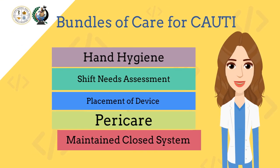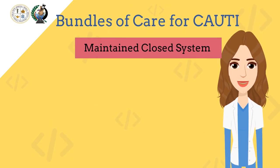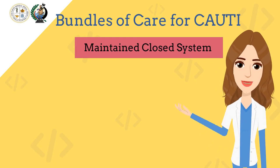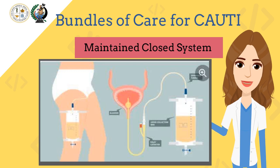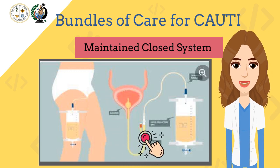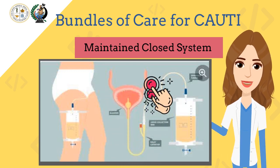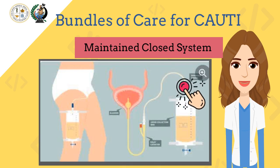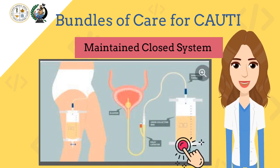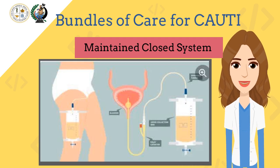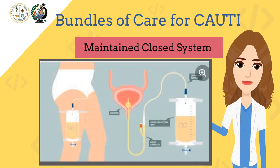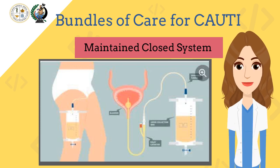For the last component of this catheter-associated urinary tract infection care bundle, we have maintaining the closed system. Maintaining sterility is its objective. Continuously maintaining a closed drainage system is indispensable in infection prevention. This applies except when irrigating the catheter and when applying leg bags for continuous bladder irrigation. Remember: the more frequently we disconnect the device, the more frequently we promote entry of multiple causative agents that lead to acquired infection.